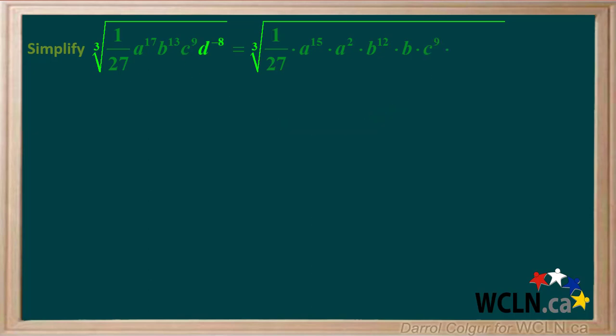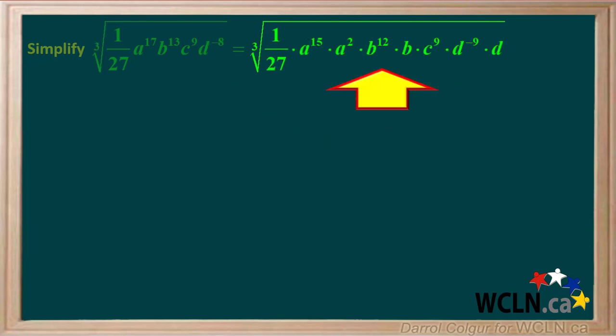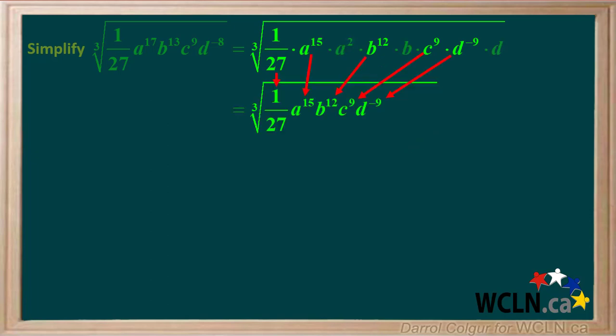d to the negative 8th can be broken down to the perfect cube d to the negative 9th times d. So now we're left with this expression. We'll write the perfect cubes together on the left side of the radicand and the leftovers — a squared times b times d — together on the right side.